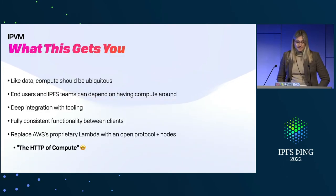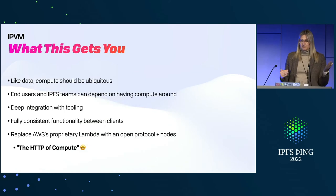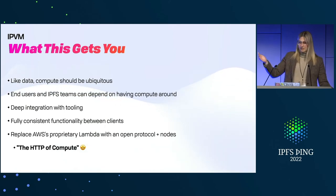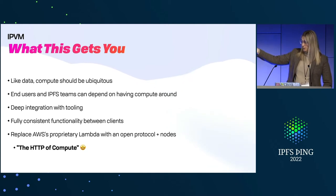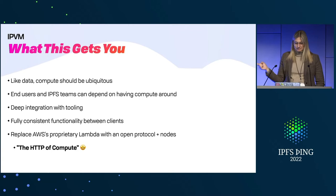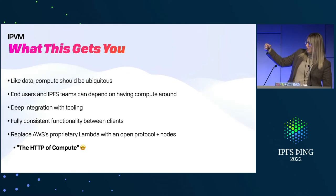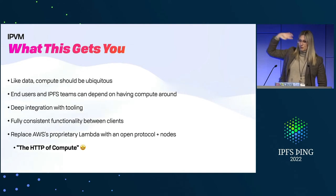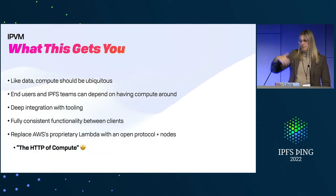This gets us a bunch of things. With content addressing, data has become ubiquitous — that's awesome. I want compute to be that awesome. Having both end users and IPFS node developers know that there is a WASM execution layer around means they can rely on it and say, 'I'm going to ship this thing and it's always going to be on the other end.' You can get deep integration with tooling, full consistency between clients, deduplicate work, and — the one I'm really excited about — we can create the HTTP of compute. No more proprietary lambdas; you push jobs out, people pick them up, there may or may not be a payment layer.